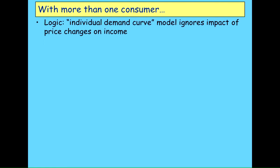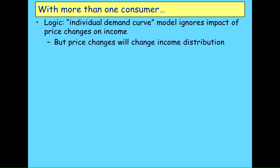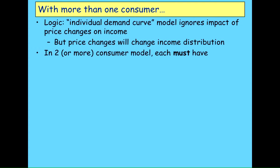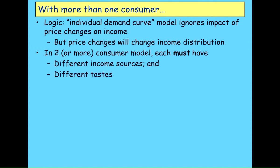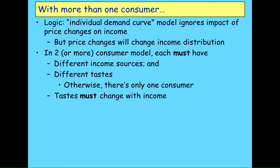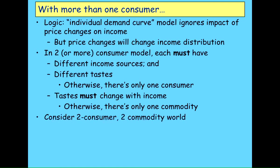What actually happens? The individual demand curve analysis ignores the impact of changing price on income, but you can't do that in general equilibrium or generally anything else. If you have two or more consumers, each must have different income sources and also different tastes — otherwise you're just working with a single individual. And similarly, tastes have to change with income, because if they don't, there's only one commodity. So your starting assumptions are: two consumers, a two-commodity world, where tastes change with income.